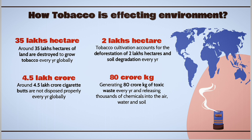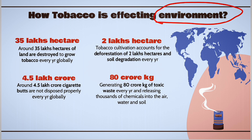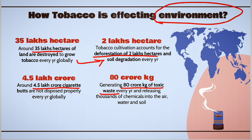Let's discuss how tobacco is affecting our environment. Approximately 35 lakh hectares of land are getting destroyed because of tobacco cultivation every year, and this is also causing deforestation of approximately 2 lakh hectares of forest every year, as well as degradation of soil. Approximately 4.5 lakh crore cigarette butts are not disposed of properly, and the use of tobacco products causes release of approximately 80 crore kilograms of toxic waste every year, releasing chemicals into the air, water, and soil.